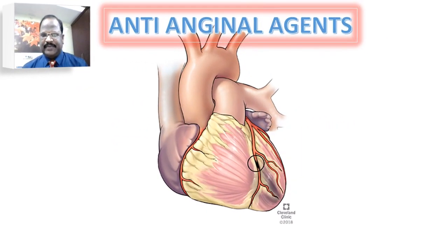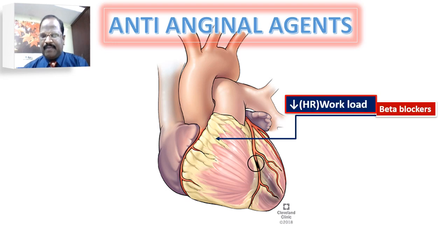Summary of anti-anginal agents. We have beta blockers, which work by decreasing heart rate, thereby decreasing cardiac workload and decreasing oxygen demand.